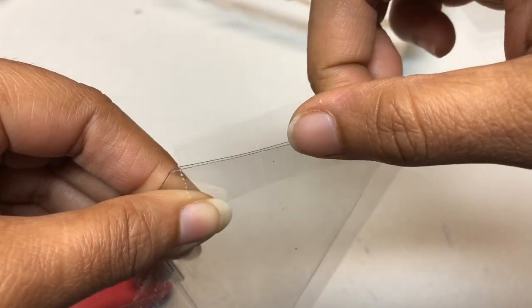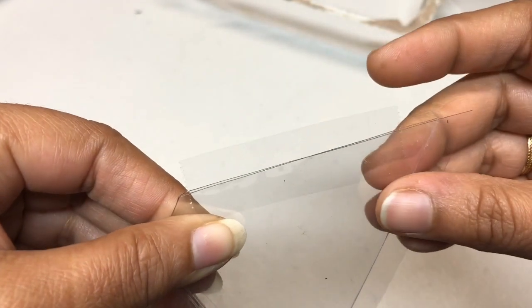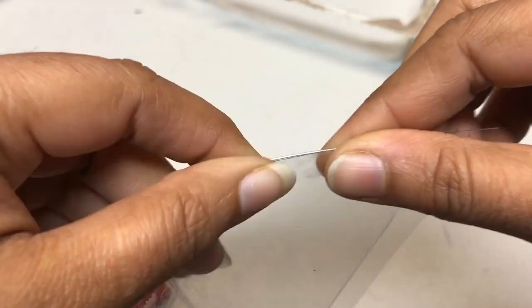Now we're done with three sides. When you do the fourth corner, you can place this cello tape on the outside because inside it's going to be difficult to stick. You can do it on the outside.